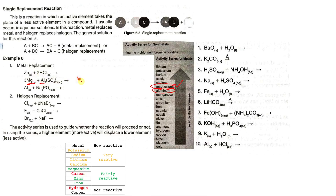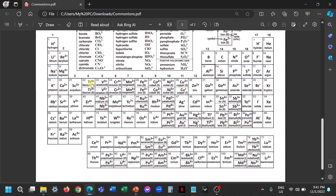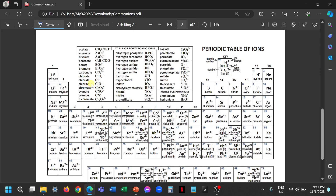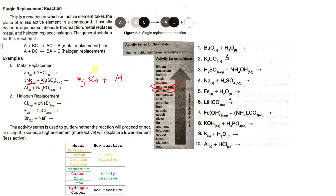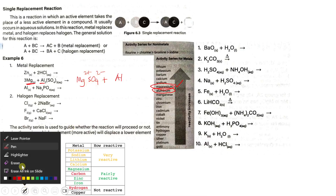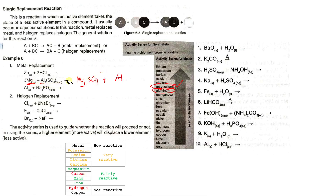So the product here is magnesium SO4 plus aluminum. Since magnesium is much more active, it replaces aluminum. Let's check the charges: SO4, that is sulfate, has a charge of negative 2, and magnesium has a charge of positive 2. So this is already neutral — no need to add other numbers. These are the products of this reaction.